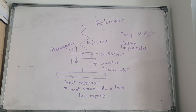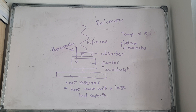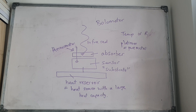A bolometer measures the change in radiation — specifically, a change in temperature due to incident radiation. It is usually used for the infrared and millimeter range of the electromagnetic spectrum.